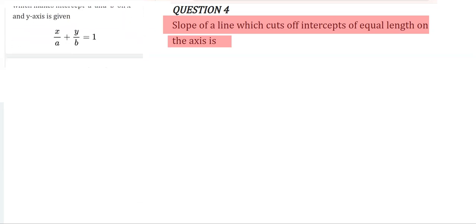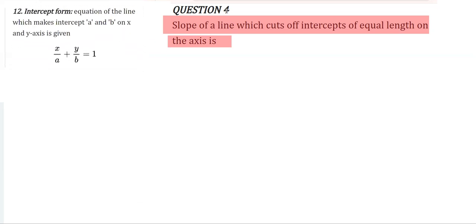If I use this relation here, according to the question a and b are equal. Now replacing a with b or b with a, we get x over a plus y over a is equal to 1. For the simplification I can write x plus y is equal to a, or x plus y minus a is equal to 0.